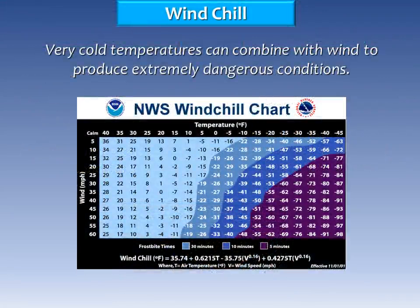Wind chill advisories and warnings are very common across Montana and can be some of the most dangerous winter weather that we have. Very cold temperatures that combine with wind can produce extremely dangerous conditions. Exposed skin is susceptible to frostbite and hypothermia can very quickly set in if precautions are not taken. Here is a chart that depicts wind and temperature combinations, and how quickly one can experience frostbite if skin is not protected. Depending on the severity and duration of winds and cold temperatures, we'll determine whether a wind chill advisory or a wind chill warning is issued.